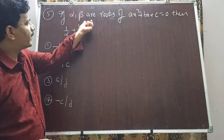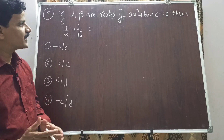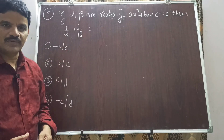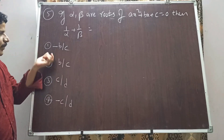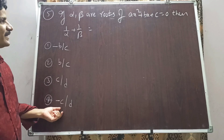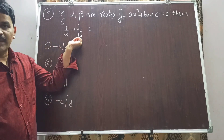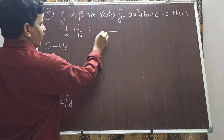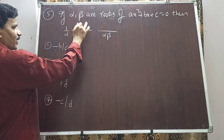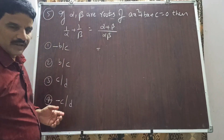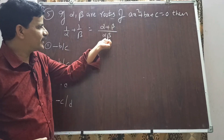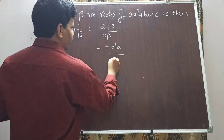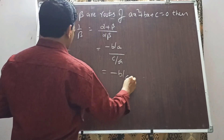Question 5: If alpha and beta are the roots of ax² + bx + c = 0, then 1/alpha + 1/beta equals how much? Taking LCM (alpha·beta): (beta + alpha)/(alpha·beta) = (alpha + beta)/(alpha·beta). Sum of roots = -b/a and product of roots = c/a. Therefore the answer is (-b/a)/(c/a), and the a's cancel giving -b/c.